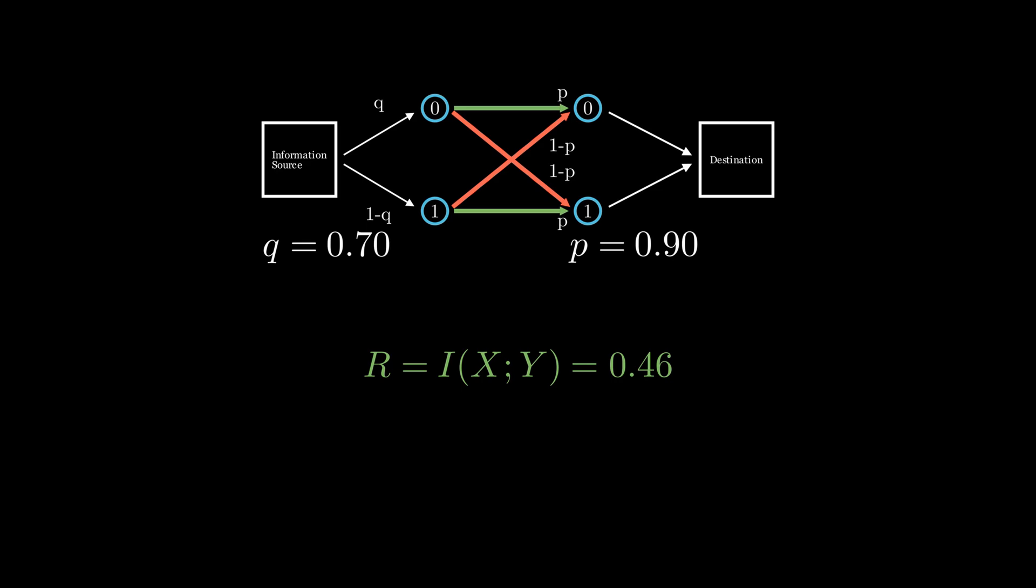The capacity for the noisy channel should be the maximum possible rate of transmission. And since we can only manipulate the entropy of our source, it will be when the expected information of the sent message is maximal. So when we maximize our input's entropy.